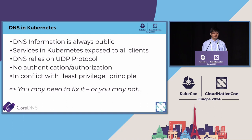Services in Kubernetes are exposed to all clients through DNS. DNS relies on the UDP protocol, which makes things worse because with UDP, you have no authentication or authorization. This is in great conflict with the least privilege principle we just discussed, so you have to fix that. There are several ways to fix it depending on your scenario.